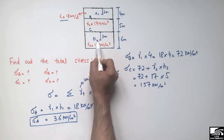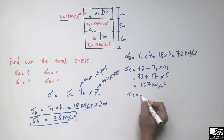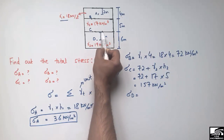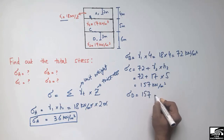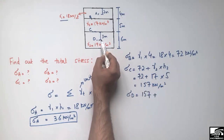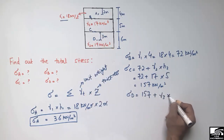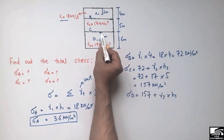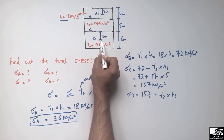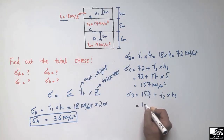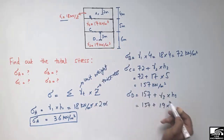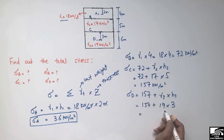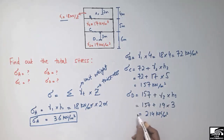For the stress at point D, we know the stress at the top of the third layer is 157 kN/m². We add the contribution of the third layer: gamma₃ times h₃, where gamma₃ is 19 kN/m³ and h₃ is 3 meters — the distance from the bottom of the second layer to point D. So 157 plus 57 gives us 214 kN/m².